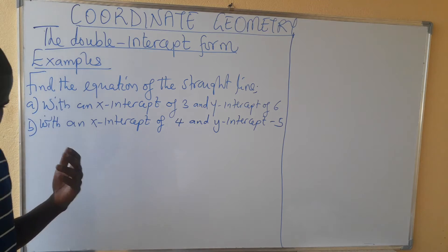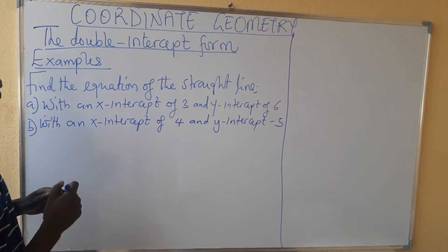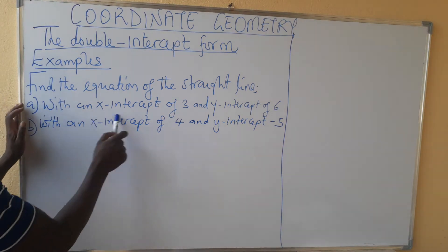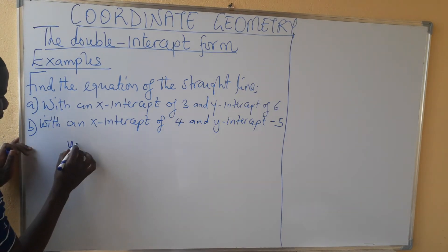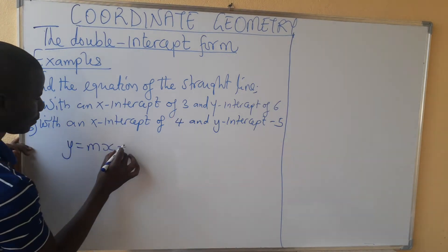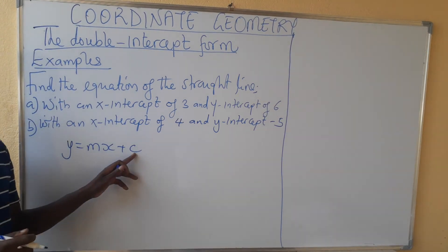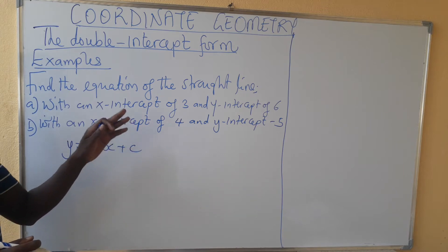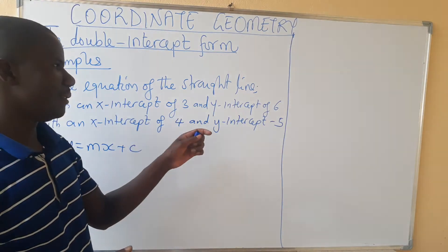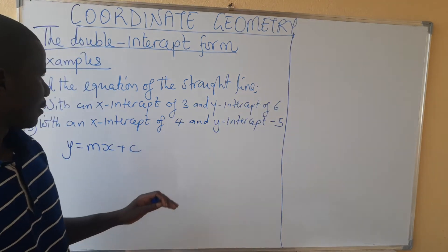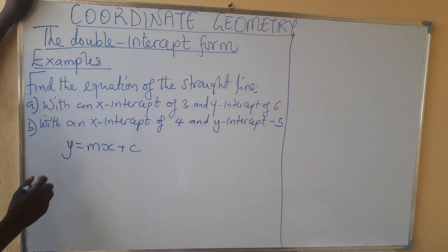To come up with the equation, we need a gradient. We need a gradient. We also need the y-intercept. So the y-intercept here is already given as 6.